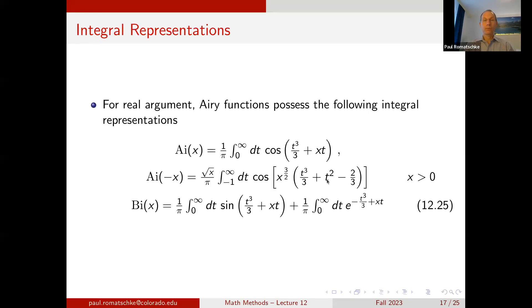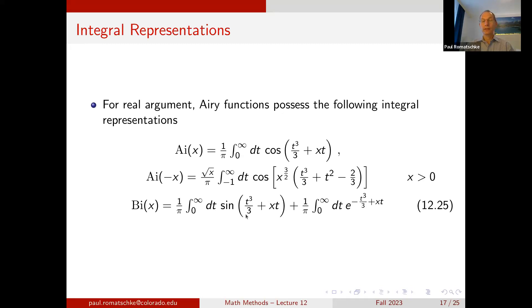The Airy functions are entire functions in the complex plane. For real argument, the Airy functions possess integral representations that take slightly different form depending on whether the argument x is positive — in which case it's an integral over a cosine — or negative — in which case it's an integral over a more complicated cosine function. Regardless of the sign of x, the Airy function Bi has an integral representation with a sine piece and an integral over an exponential.